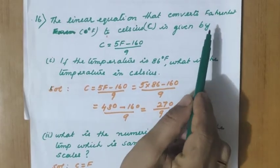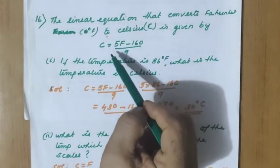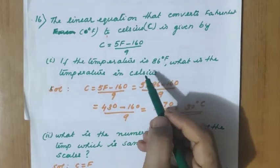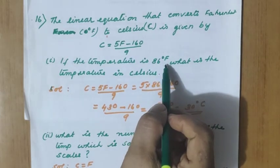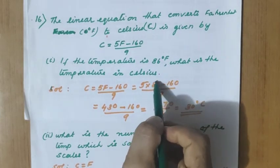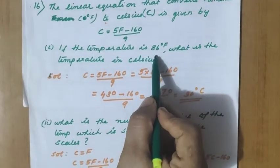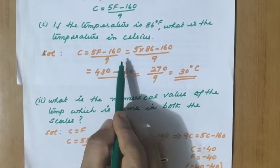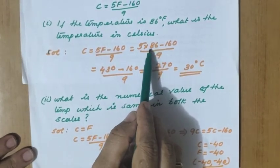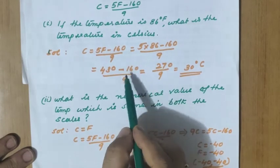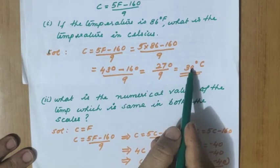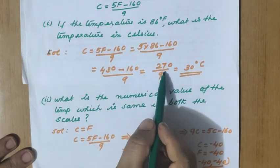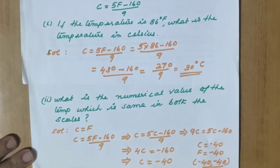The linear equation that converts Fahrenheit to Celsius is given by C equals 5F minus 160 divided by 9. If the temperature is 86 degrees Fahrenheit, what is it in Celsius? Substituting F equals 86: C equals 5 into 86 minus 160 divided by 9, which is 430 minus 160 divided by 9, equals 270 by 9, equals 30 degrees Celsius.